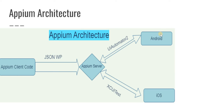Appium will execute your code on either Android or iOS through an automation framework. From the Android family — now called the Google family — there is an automation framework called UI Automator 2. The newer version, UI Automator 2, provides much better compatibility and smooth testing to communicate between your Appium server and your execution platform, which could be a physical device or a virtual device.